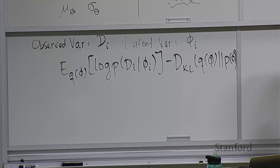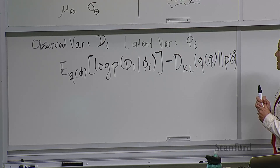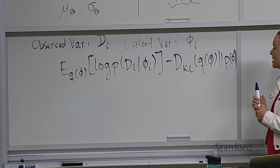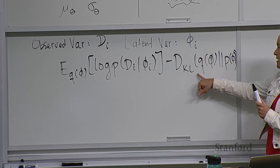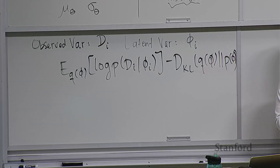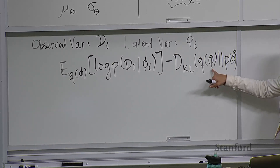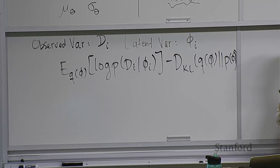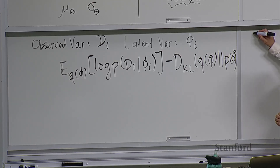Q can be conditioned on anything — it just needs to give you some estimate over phi. We have a choice in what we condition Q on. We can condition it on D_i, but we may also want to condition it on something else. Does anyone have thoughts on what we might condition Q on?